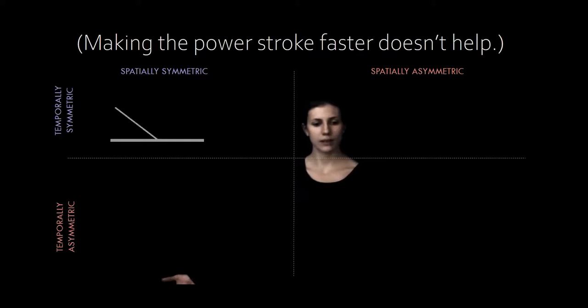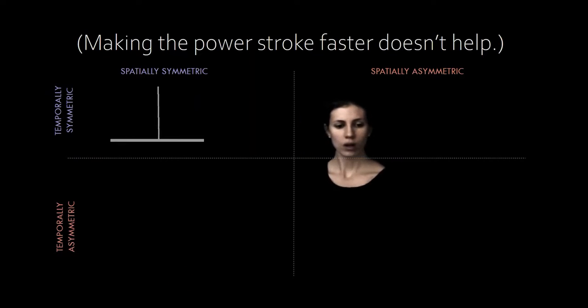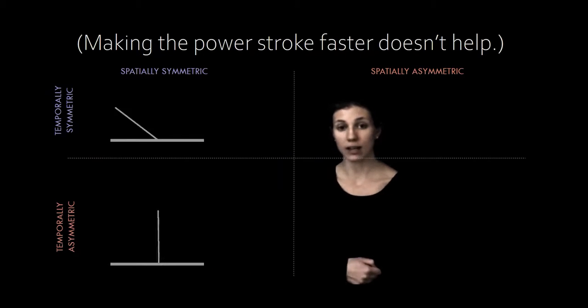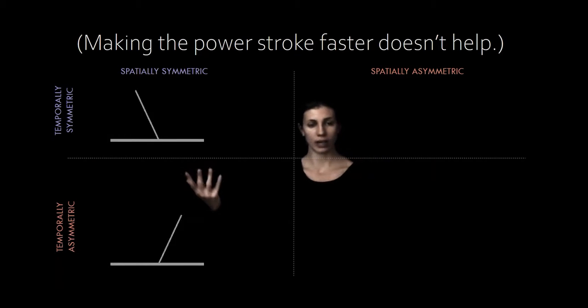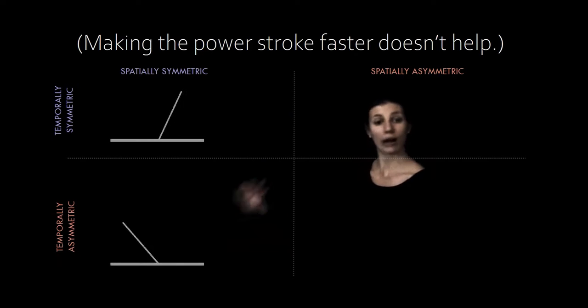So in this time-reversible flow, one byproduct is that the speed of the cilium doesn't really matter. Even if the power stroke is very fast compared to the recovery stroke, you're still going to move fluid in the same pattern. And if your stroke is spatially symmetric, you won't have any net fluid motion at all.